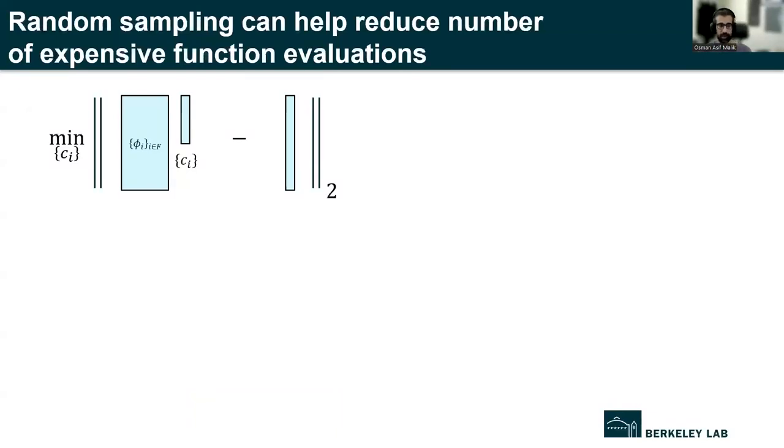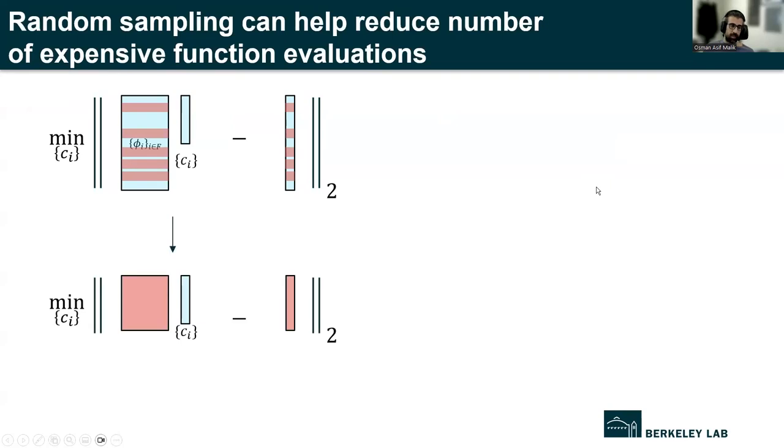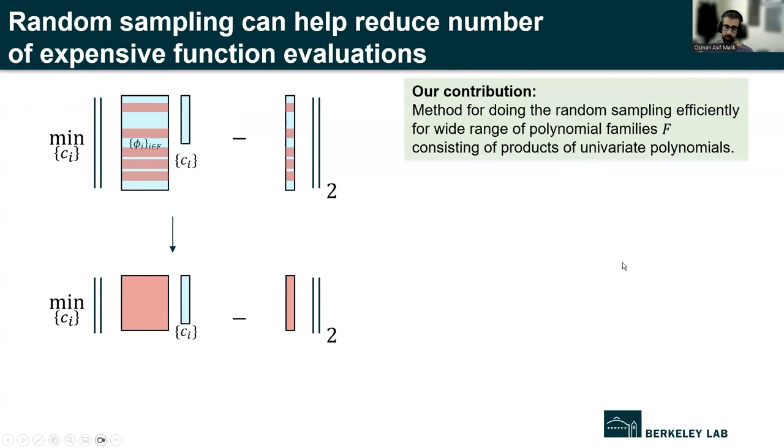So we can sort of take a trick out of the hat from the field of randomized numerical linear algebra, which is to look at our big least squares problem and then sample a subset of the equations randomly, which gives us a smaller least squares problem to solve. So not only does this require fewer flops to solve, but we also now have a shorter right-hand side vector, which means fewer expensive model evaluations. So the contribution that we make in our paper is coming up with a very efficient way of doing this random sampling for a wide range of polynomial families F that are used in practice in function approximation when the polynomials are univariate polynomials or they're a product of univariate polynomials.